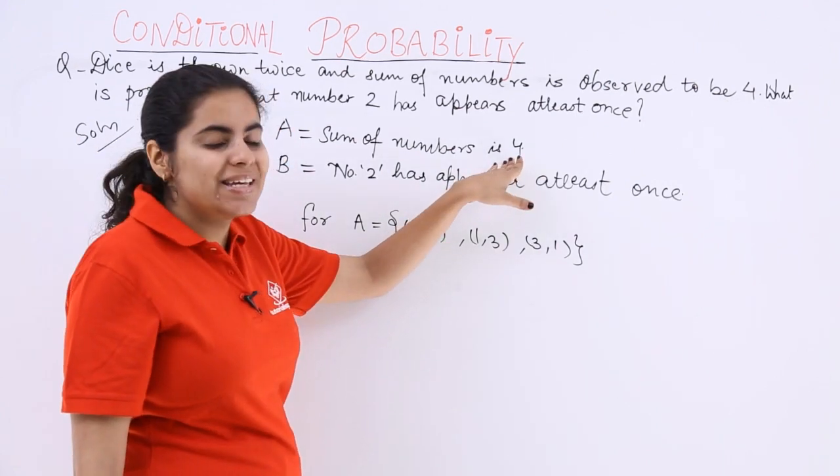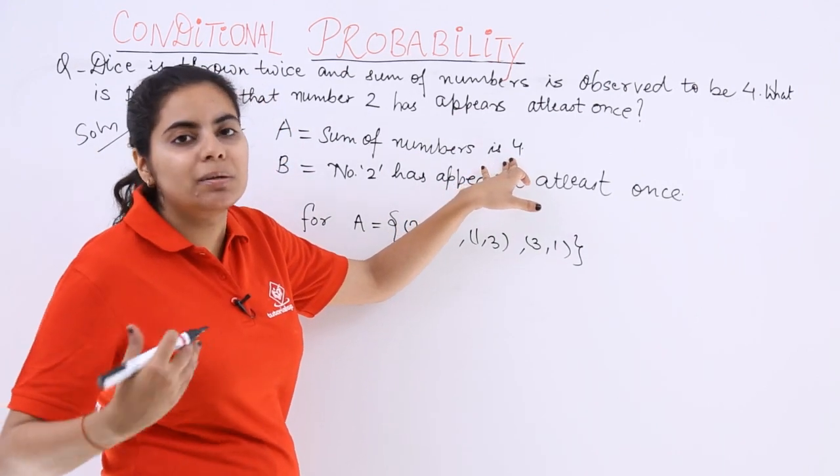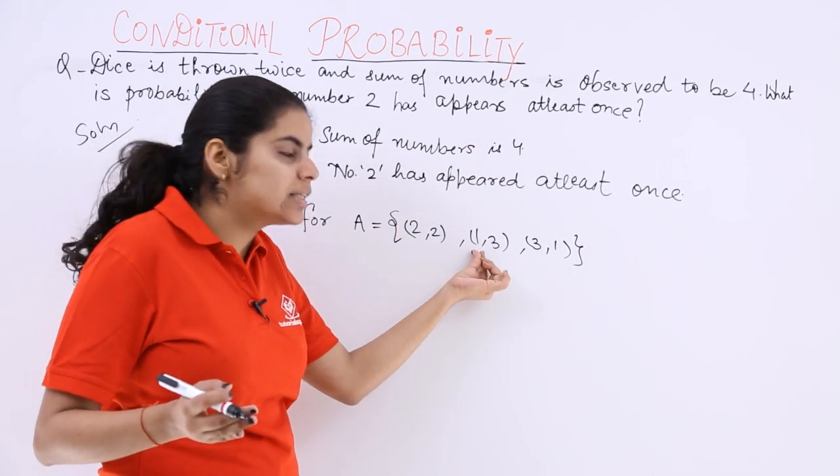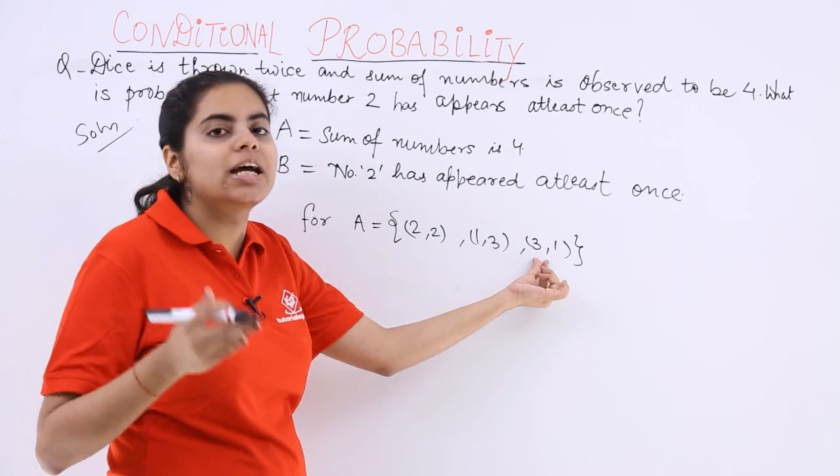Because there is no such case as 4, 0. Because 0 does not appear on any one of the dice. These two cases are different. I hope you know that. First die shows 1. Here first die shows 3.